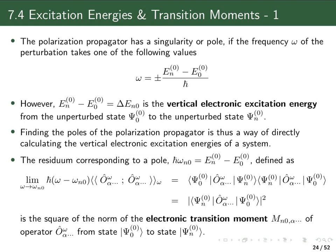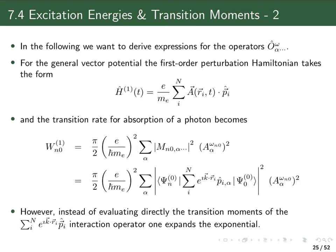Now let's look in more detail at these transitions, and in particular let's have a look at how these operators look. In the first part of chapter seven, we had a very general expression for the vector potential of electromagnetic radiation.